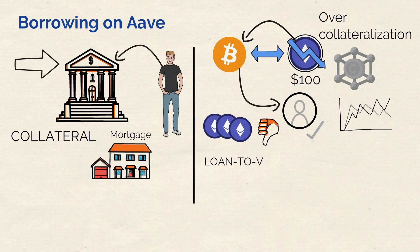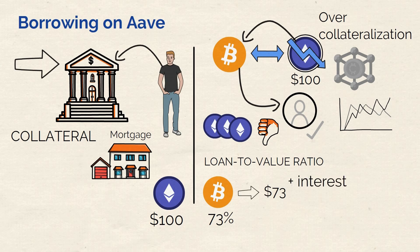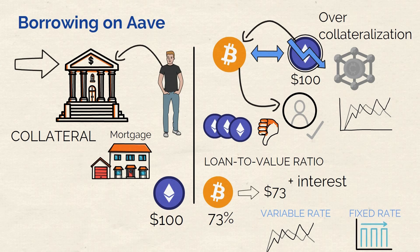This is where the loan-to-value ratio comes in. For example, the loan-to-value ratio for wrapped Bitcoin is 73% around the time of this video. So if you deposit $100 worth of Ethereum, you can borrow $73 worth of wrapped Bitcoin back. Plus, like a regular loan, you also have to pay interest on it. You can choose between a variable rate or an average fixed rate. The variable rate is based on current supply and demand, whereas the fixed rate is based on the supply and demand in the last 30 days.